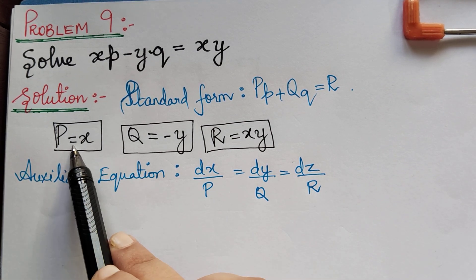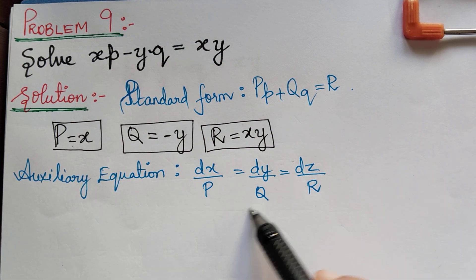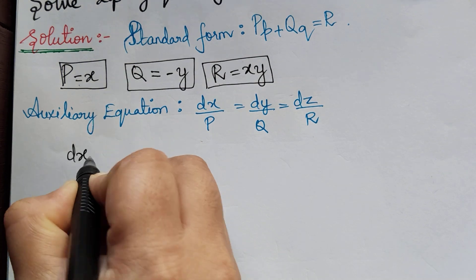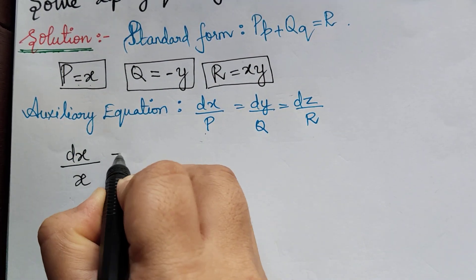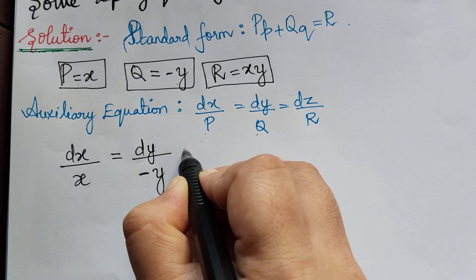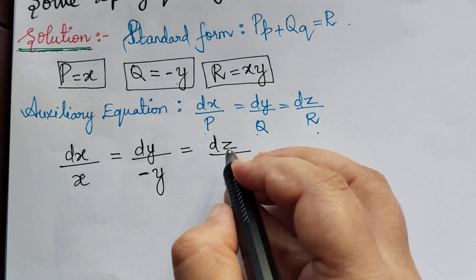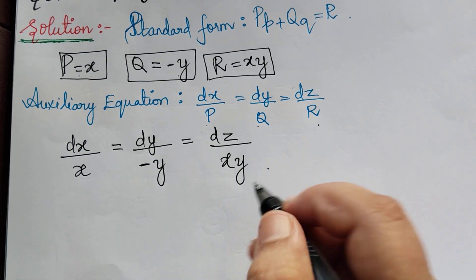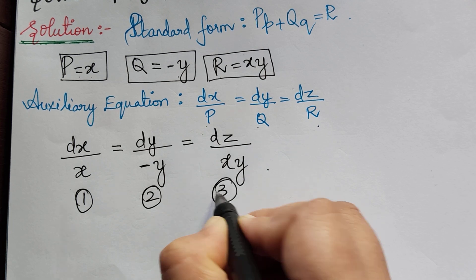Now let us substitute the values of P, Q, and R into the auxiliary equation. When we substitute, we get dx by P which is x, equal to dy by Q which is negative y, equal to dz by R which is xy. We have written the auxiliary equation — let us mark these as 1, 2, and 3 respectively.